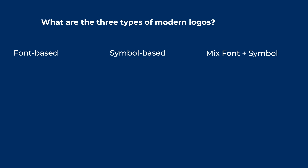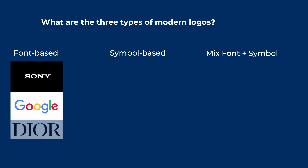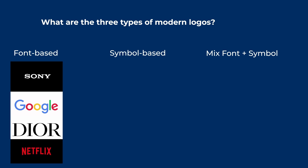Font-based logos are logos created by choosing a nice clear font to display the business name. Examples of font-based logos are Sony, Google, Dior, and Netflix. They have pretty much no distinguishable feature except their font. This is a great way to create a recognizable logo — all you need to do is find a font you like, write your business name, and you're done. It's by far the easiest way of creating a logo.